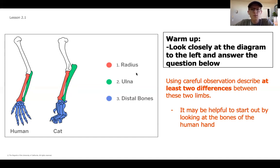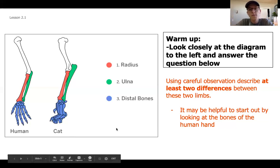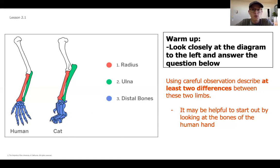Go ahead and take a moment to pause the video. If you haven't grabbed a pencil and paper, do that now. You want to go ahead and answer this question: using careful observation of the cat and human limbs, what are at least two differences that you notice between these two front limbs? Go ahead and pause right now.